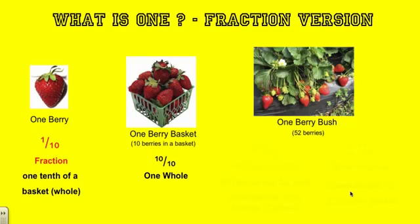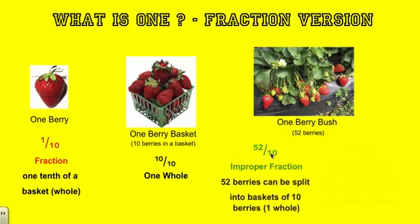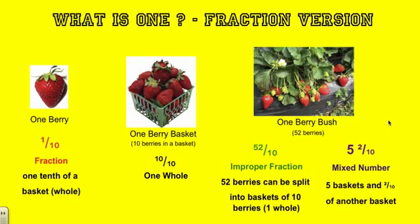And going back to the strawberry bush, we have 52 total berries in the bush divided by 10 baskets. So those 52 berries can be split into baskets of 10, and then we're going to have a couple left over. And so that's where our mixed number comes in. So we have 5 whole baskets and then 2 of 10 left over for an additional basket.